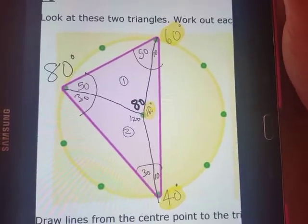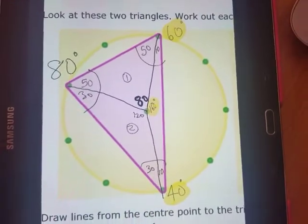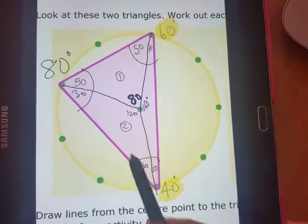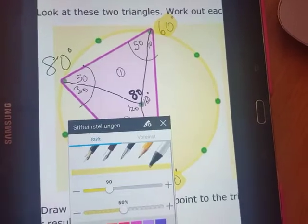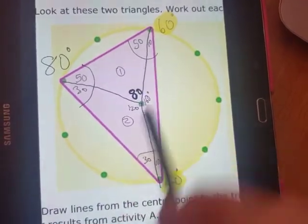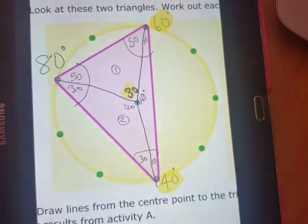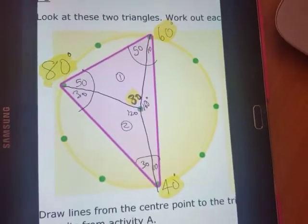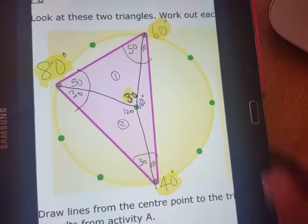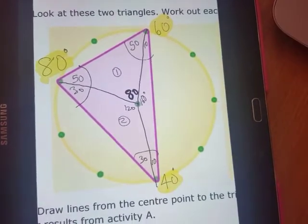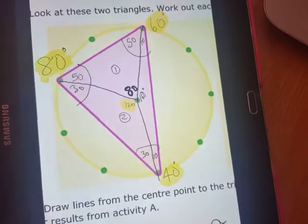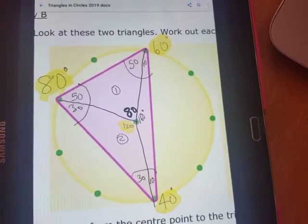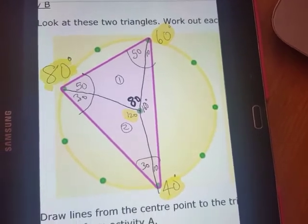What else could you do? You could have a look at the other interior angle. So let's look at the 80—look at the 80 degrees, look at the three corner angles that you've got there. Do you notice anything? And then try it again with the third one. Look at the 120. Do you notice anything compared to the three angles at the corner?